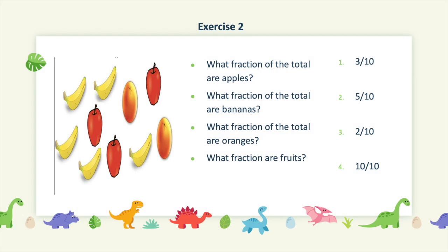Take a look at this picture containing bananas, apples, and oranges. The first question is asking: what's the fraction of apples? Our numerator will be the amount of apples, which is 3 from the picture, while the denominator will be the total amount of fruits, which is 10. Hence, our fraction would be 3 out of 10.